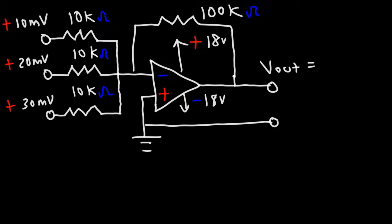Here's another example problem that you could try. Calculate the output voltage of this particular summing amplifier circuit. So this time, the feedback resistor has a different value than R1, R2, and R3.